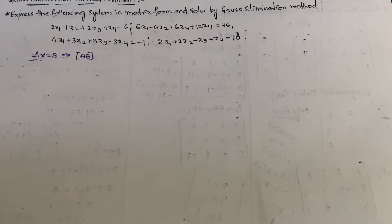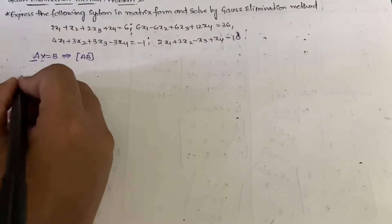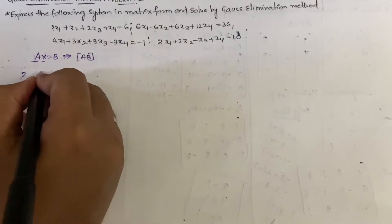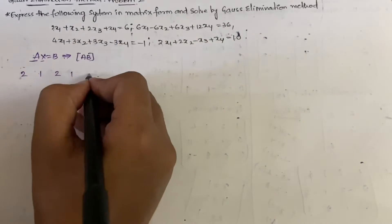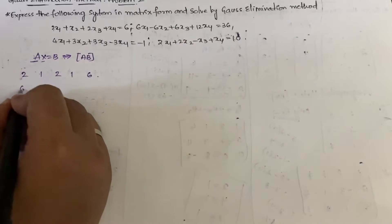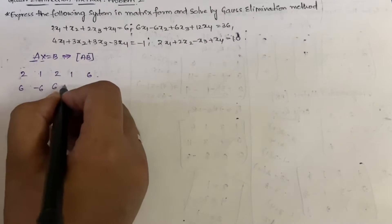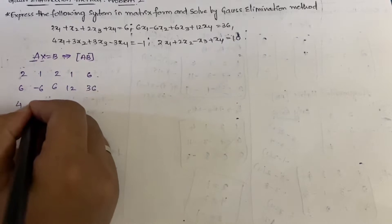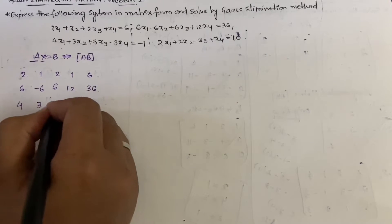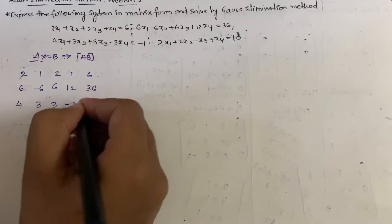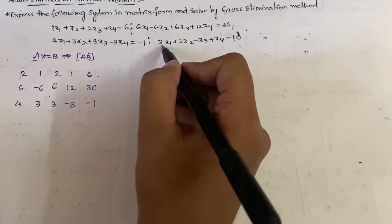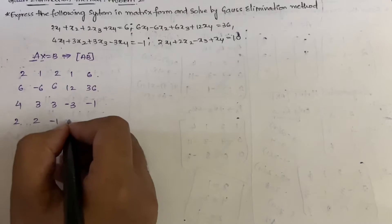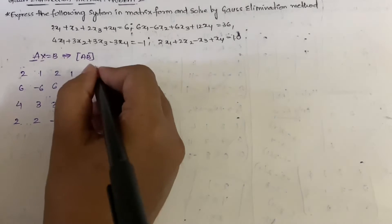Now writing the augmented matrix directly. The first row is: 2, 1, 2, 1 | 6. The second row: 1, -1, 1, 2 | 6. The third row: 4, 3, 3, -3 | -1. The fourth row: 2, 2, -1, 1 | 10. This is our augmented matrix.